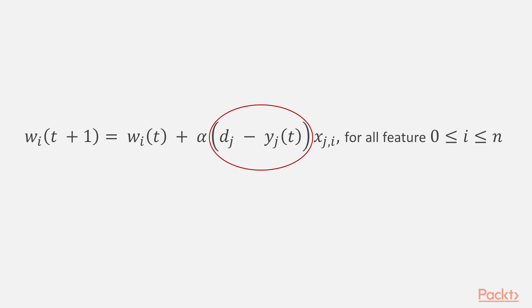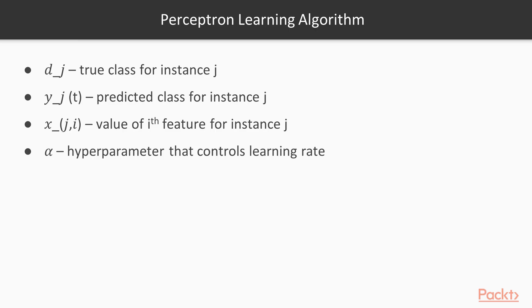Where dj is the true class for instance j, yj of t is the predicted class for instance j, xj i is the value of the ith feature for instance j, and alpha is a hyperparameter that controls the learning rate. If the prediction is correct, dj minus yj of t equals zero, and this term equals zero.